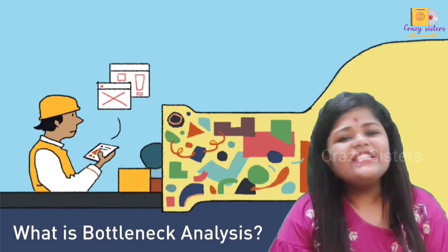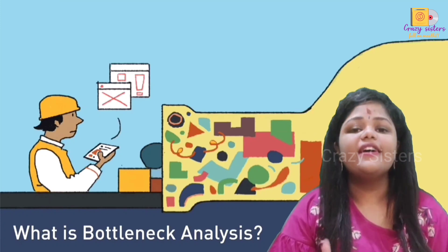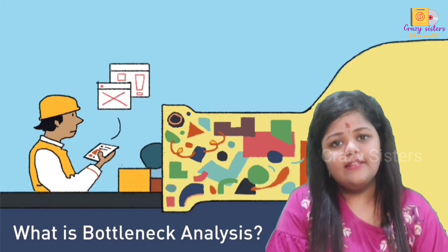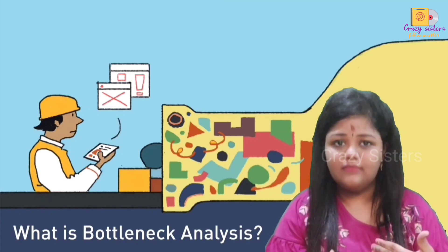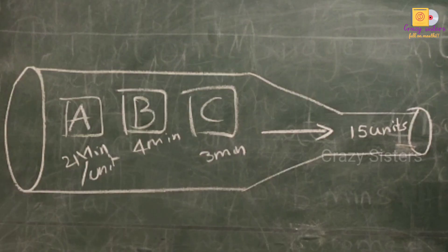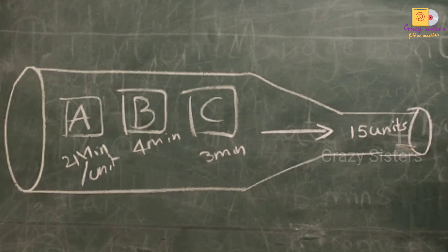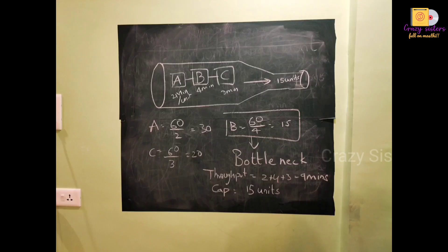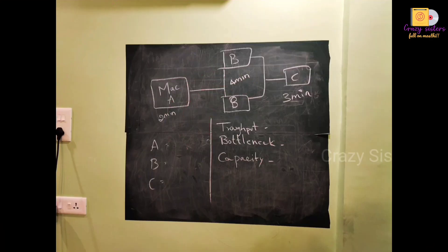Now let's go to bottleneck. Bottleneck is nothing but the slowest process among different processing units. For example, three production units: A takes 2 minutes, B takes 4 minutes, and C takes 3 minutes. So A produces 60÷2=30 units per hour, B produces 60÷4=15 units, and C produces 60÷3=20 units. Our bottleneck is B, the slowest at 15 units per hour.